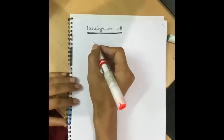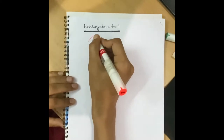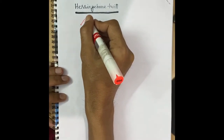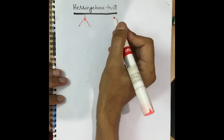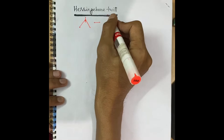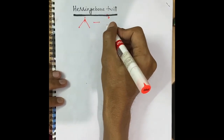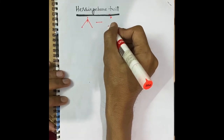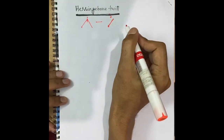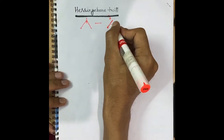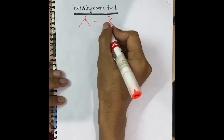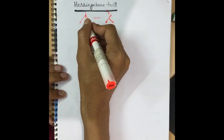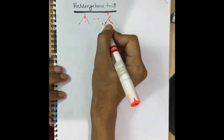Herringbone twills are also produced by reversal of direction, but in a different manner from waved twill. In waved twill, the reversal takes place on a point — the twill runs from one side to another and then reverses at a point. But in herringbone twill, the reversal is different: the twill runs from left to right and then the other line cuts into the first line.